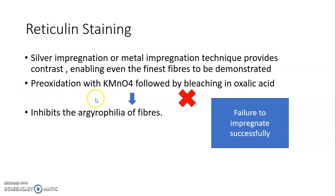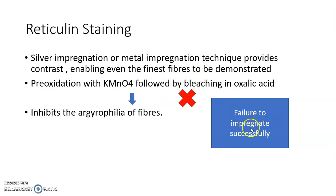Pre-oxidation with KMnO4 followed by bleaching in oxalic acid is an important step that inhibits the argyrophilia of the fibers and helps to impregnate the metal over the fibers. If this step is skipped — if pre-oxidation followed by bleaching in oxalic acid is not done — then there is failure to impregnate the silver over the fibers successfully.